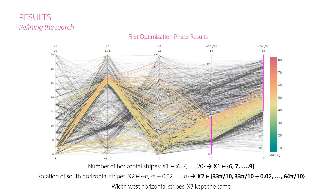After finding the most suitable optimization algorithms to solve this particular problem, we implemented an interactive parallel coordinate graph. This visualization helped us to identify the key decision variables as well as redefine their range. The critical decision variables were the number of horizontal stripes and the rotation of the south stripes.